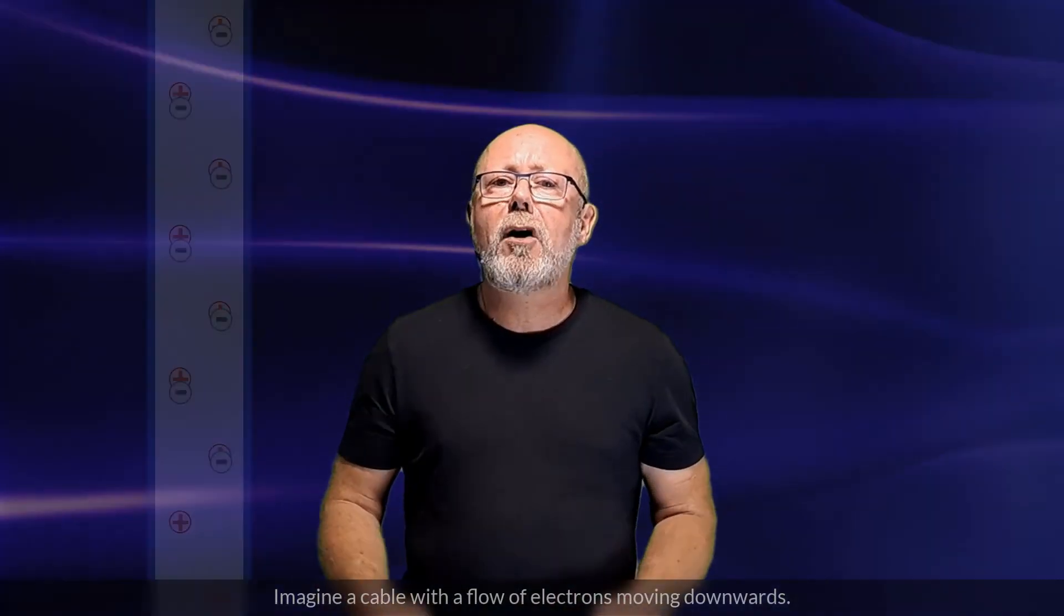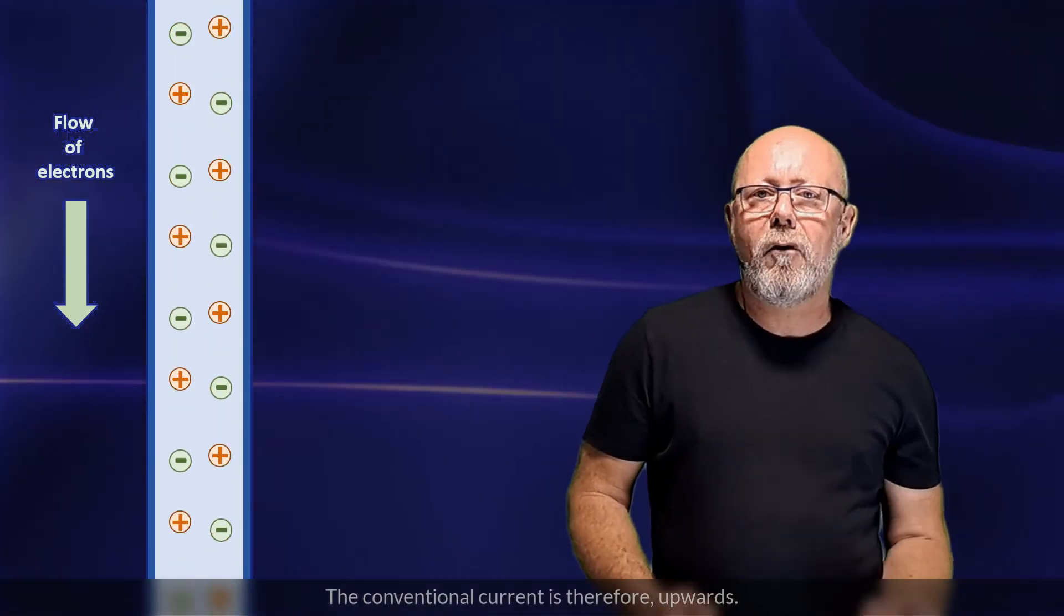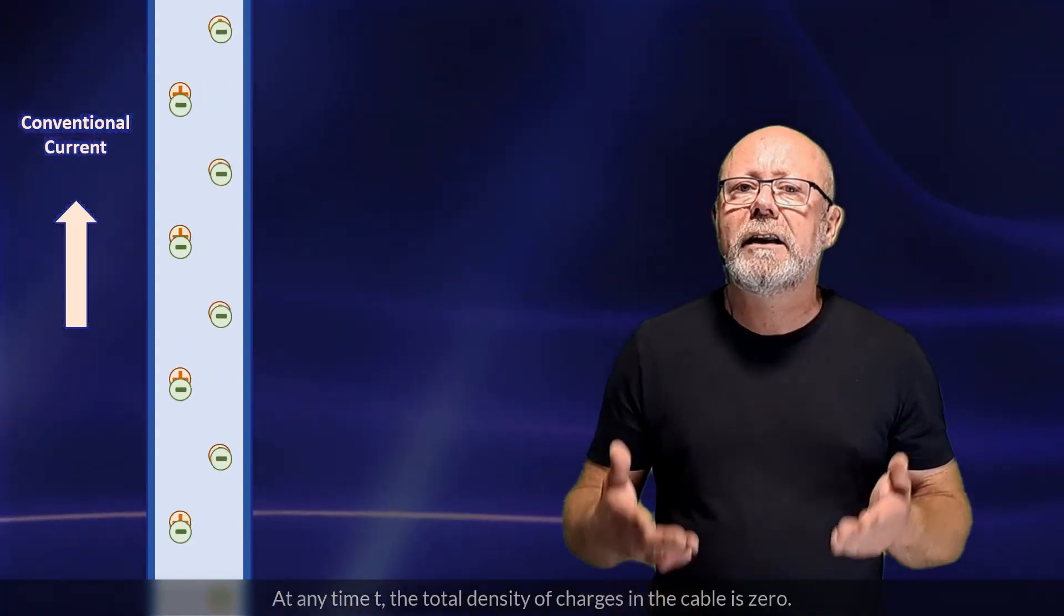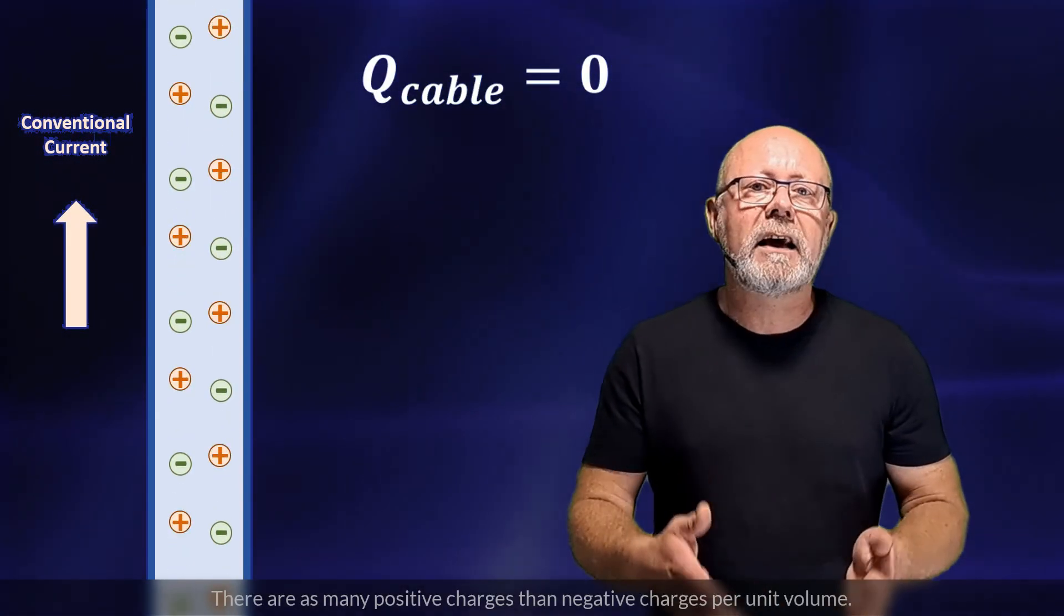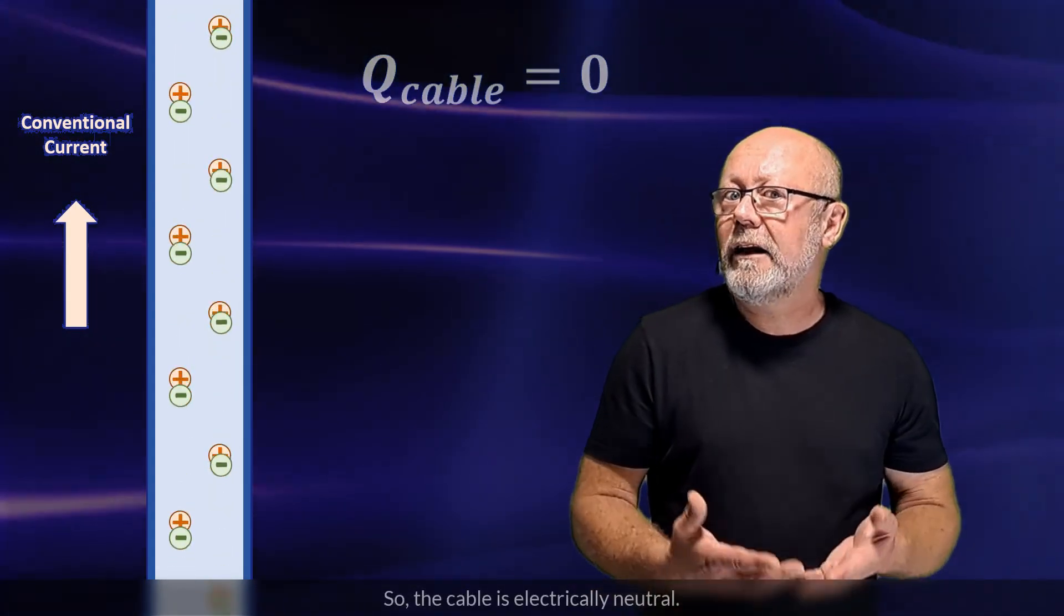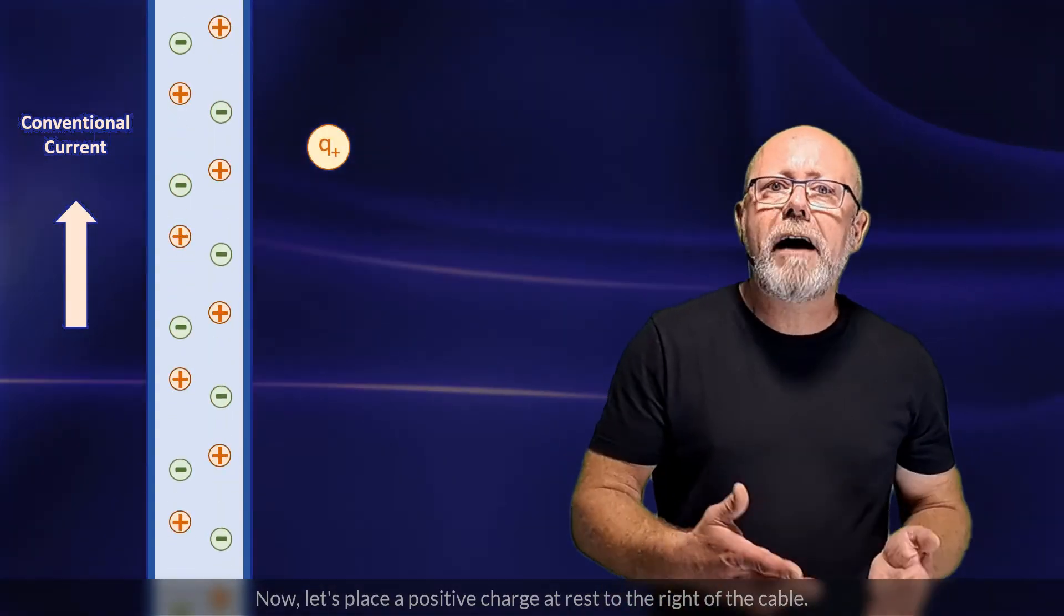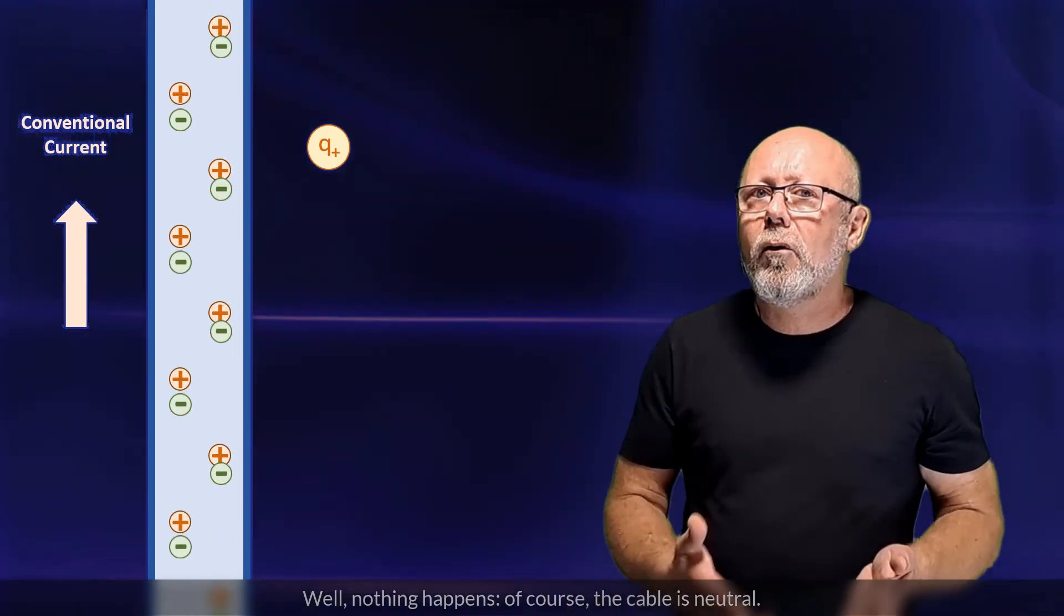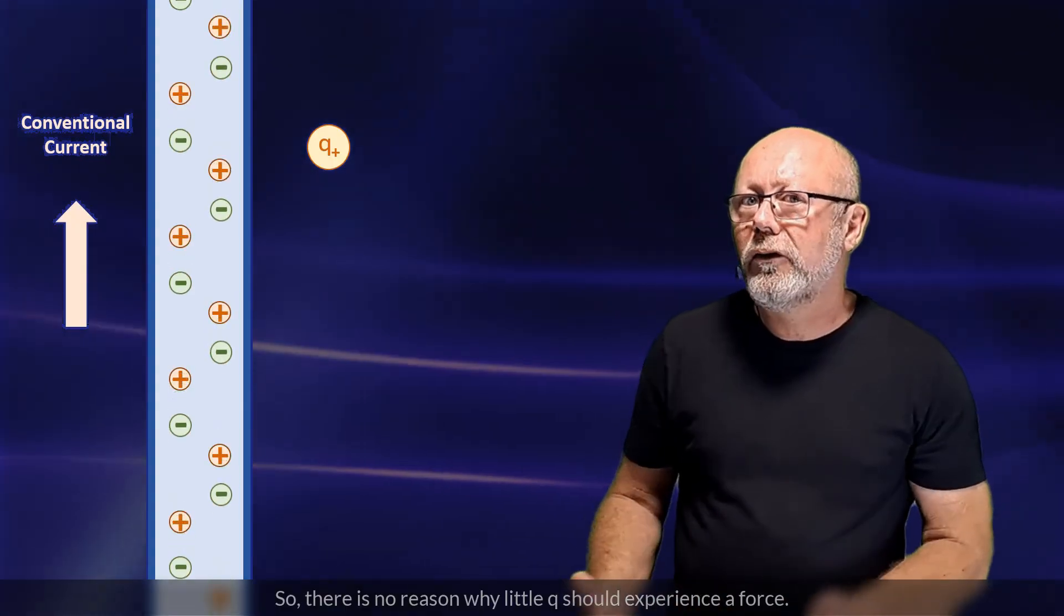Imagine a cable with a flow of electrons moving downwards. The conventional current is, therefore, upwards. At any time t, the total density of charges in the cable is zero. There are as many positive charges than negative charges per unit volume. So, the cable is electrically neutral. Now, let's place a positive charge at rest to the right of the cable. Well, nothing happens. Of course, the cable is neutral. So, there is no reason why little q should experience a force.